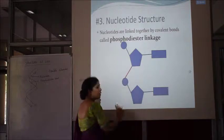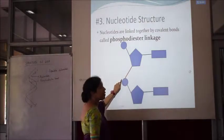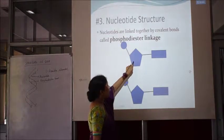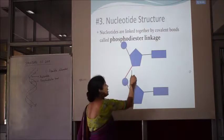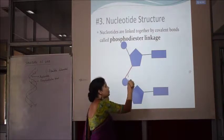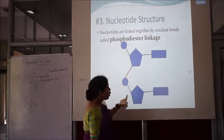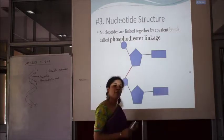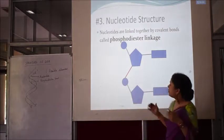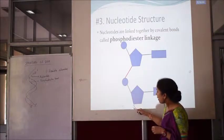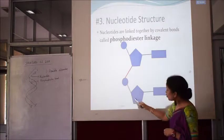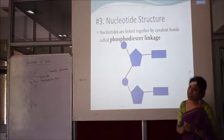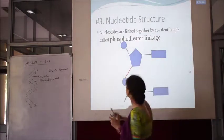There is a bond formed between the 5' phosphate and the 3' carbon of deoxyribose. The third carbon of deoxyribose has a hydroxyl group and it forms a bond with the 5' phosphate of the subsequent nucleotide. This is a covalent bond called a phosphodiester bond, and this happens repeatedly — the 3' hydroxyl of deoxyribose forms a phosphodiester bond with the phosphate of the subsequent nucleotide. This is how the chain continues.